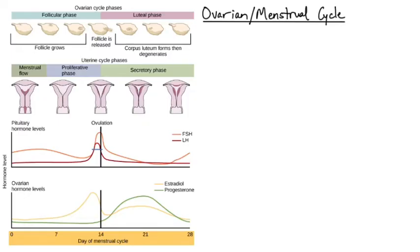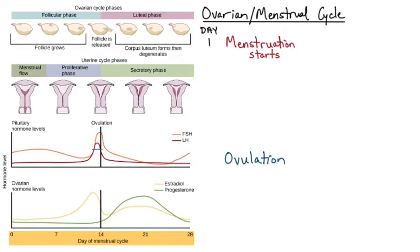There are two main events in the ovarian and menstrual cycles. The first one is menstruation or the period, and the second event is ovulation, which takes place later in the cycle — menstruation on day one and ovulation about two weeks later, around day 14.